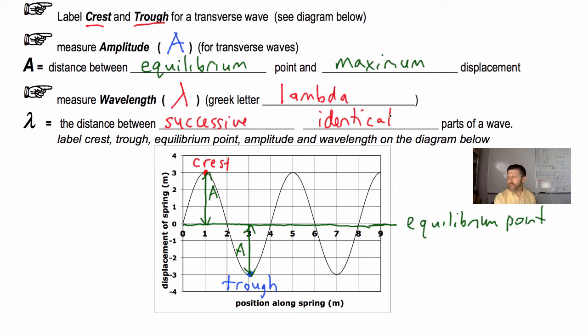What the heck does that mean? Successive means one right after the other. Identical means it's the exact same part of the wave. So one easy place to measure the wavelength is from crest to where? To the next crest. That could be labeled lambda, the wavelength.